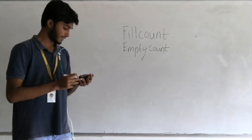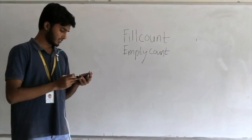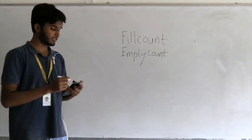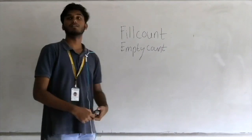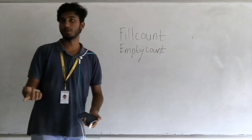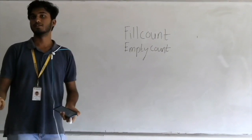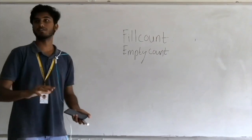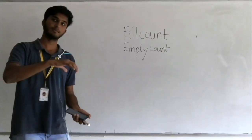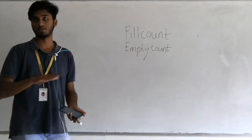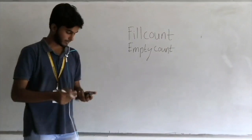Now for the semaphore-based program. In the producer block, when the producer produces an item, the fill count increments by one and the empty count decrements by one. Empty count is the number of empty spaces in the buffer, so when the producer produces an item, one empty space is occupied — that's why empty count is decremented by one.